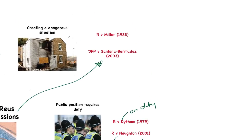Finally, there is the notion of creating a dangerous situation. If a person creates a dangerous situation through their own fault, they may be under a duty to take reasonable steps to stop that danger, and may incur criminal liability for failing to do so. The key case is Miller, where a vagrant fell asleep on a mattress and his cigarette caused it to start burning. Rather than putting it out, he moved to another room and fell back to sleep. The fire spread and burnt the house — he was convicted of arson not for starting the fire, but for failing to put it out.